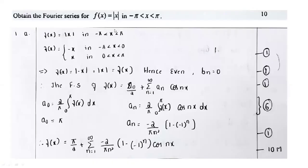The first question from Module 1 is: obtain the Fourier series for the given function f(x) equal to modulus of x in the range minus pi less than x less than pi. The range of x is between minus pi and pi, and the function given is modulus of x.